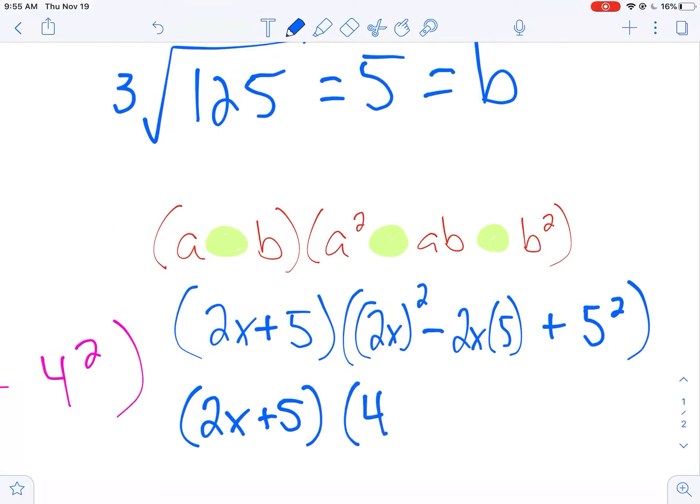2x squared is 4x². 2x times 5 gives me 10x. 5 squared gives me 25. I have just factored a sum and difference of cubes.